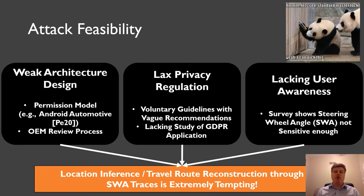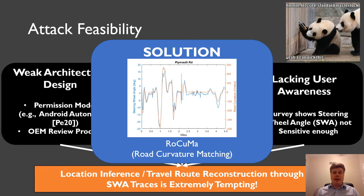The location inference, or travel route reconstruction, through steering wheel angle is extremely tempting. And we're going to do this by introducing a novel technique called RAKUMA, which stands for road curvature matching. And this is pretty much explained in the figure here. The blue trace is a steering wheel angle, while the orange trace is a road curvature. And as you can see, they're highly correlated with each other. In this case, 0.93. An assumption we have to make in order for RAKUMA to work is that we have to know roughly the geographical area we're conducting in. So we need to know where the victim lives, like in what city, for example.